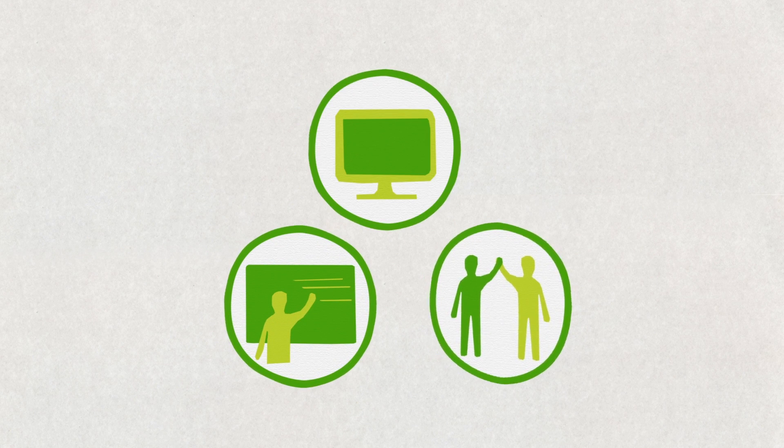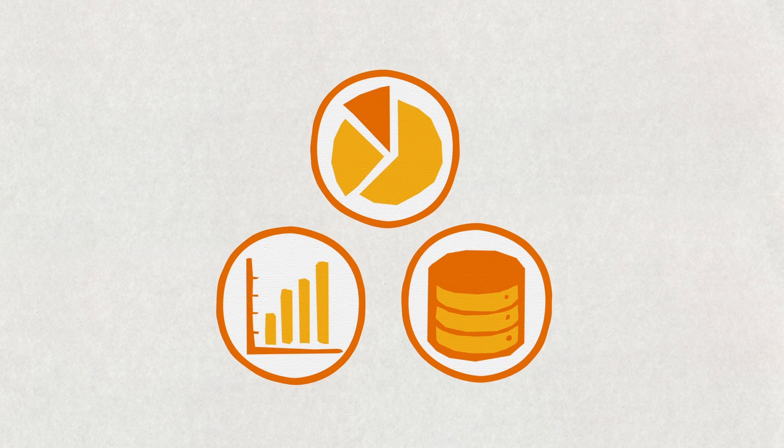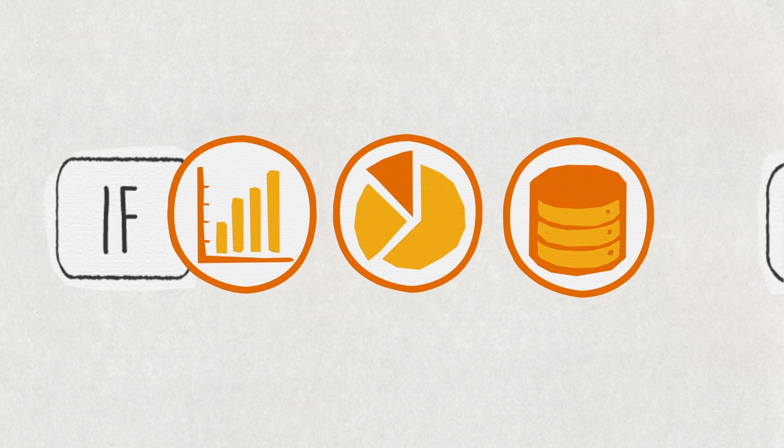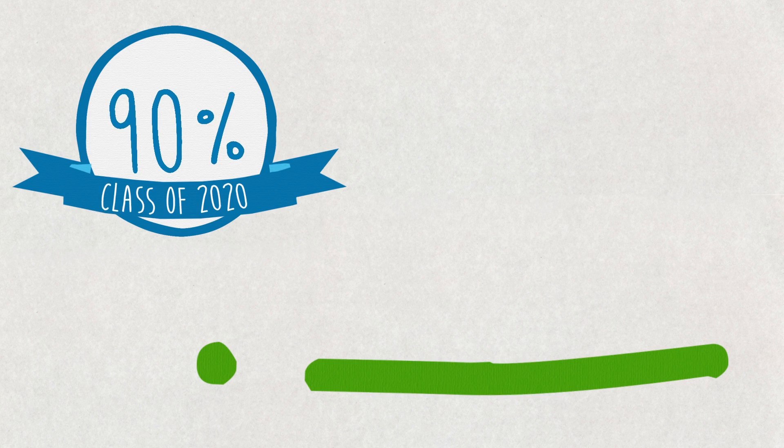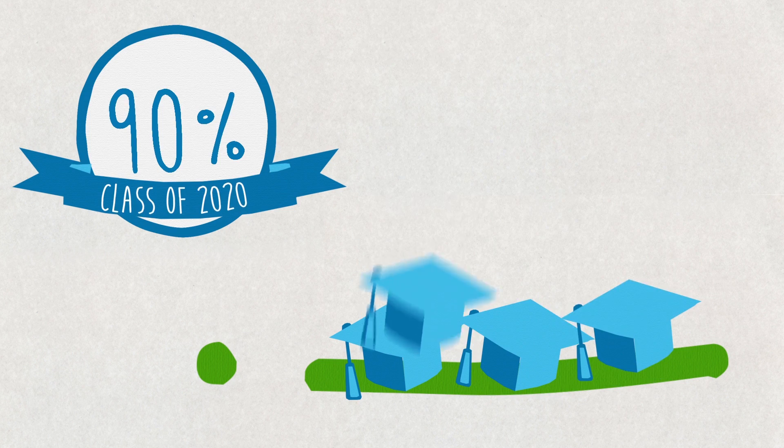That's where you come in. Using publicly available data, fill the spaces between if and then to discover the causes that will lead to the effect of 9 out of 10 students in the class of 2020 earning their diplomas on time.